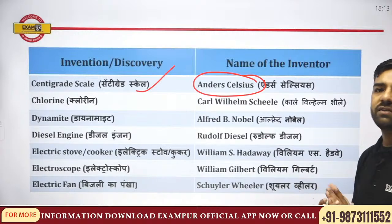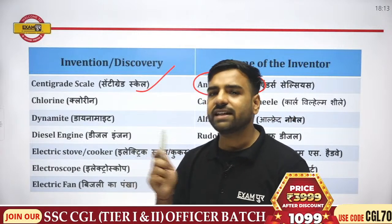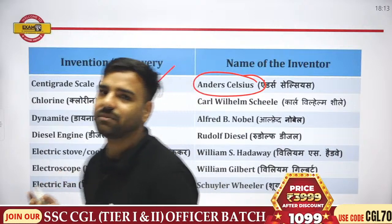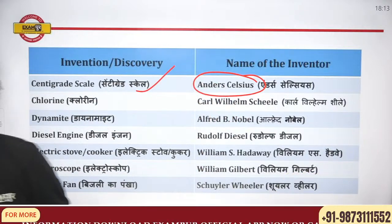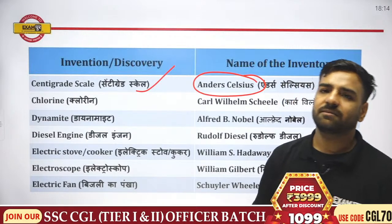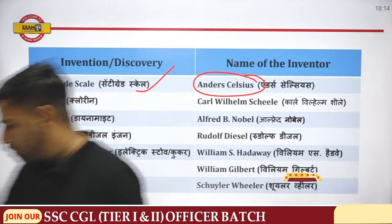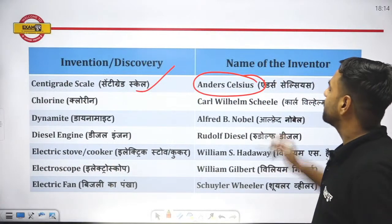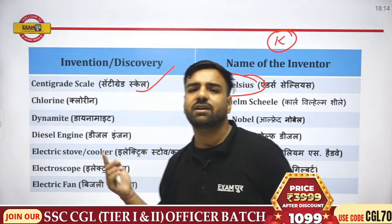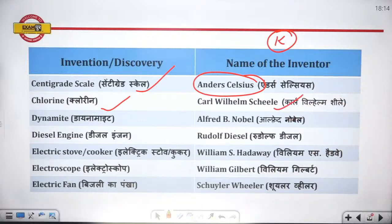What is the SI unit of temperature? Please remember it is Kelvin. Other units are Réaumur, Centigrade, and Fahrenheit, but the SI unit is Kelvin. Next, chlorine was discovered by Karl Wilhelm Scheele. Then comes dynamite — very important, asked again and again in the examination. Dynamite was discovered by Alfred Nobel — put a double star here.